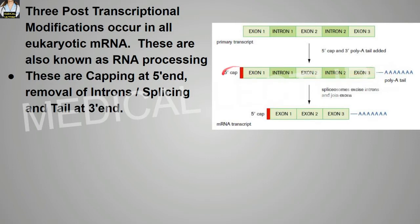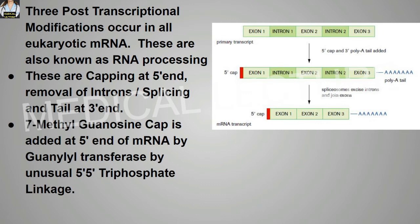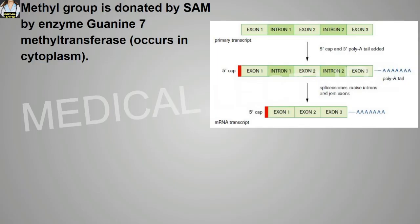The three events are 5' capping, 3' polyadenylate tail addition, and splicing — removal of introns — in post-transcriptional modification. The 7-methylguanosine cap is added at the 5' end of mRNA by guanyltransferase via an unusual 5' triphosphate linkage. The methyl group is donated by SAM (S-Adenosylmethionine) by the enzyme guanine-7-methyltransferase, and this occurs in the cytoplasm.